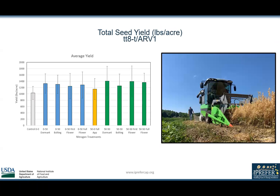The results for the total seed yield for TT8 were inconclusive due to the high variability across replications of treatments caused by wild-type Pennycress contamination. However, there appears to be a trend of increased seed yield for treatments with 50 pounds of nitrogen in the fall and an additional 50 pounds of nitrogen in the spring.